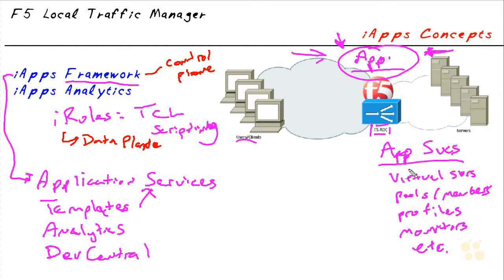Before, we had to configure our virtual servers, our pools, pool members, profiles, policies, and iRules — all those things independently for each application. Basically lots of time, lots of configuration, and lots of room for errors, especially in large enterprise environments. Now iApps can ask you a few questions and build stuff for you — based on your answers, the BIG-IP system will actually create these objects for you.